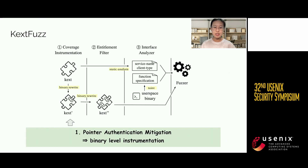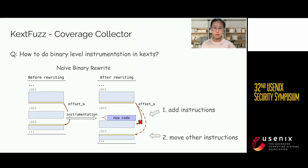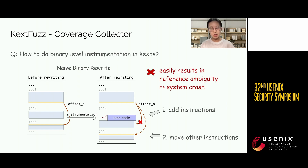Firstly, the pointer authentication mitigation in MacOS kernel helps us enable binary-level instrumentation for coverage collection. Binary-level instrumentation is usually hard because the structures of binary files are tight. As shown in the picture, once we add new instructions to the binary, the other instructions will be moved. As a result, the offsets between instructions and data will be changed. Binary code uses offsets as references commonly. Such reference errors in drivers will make the system crash during fuzzing, consuming a lot of time.